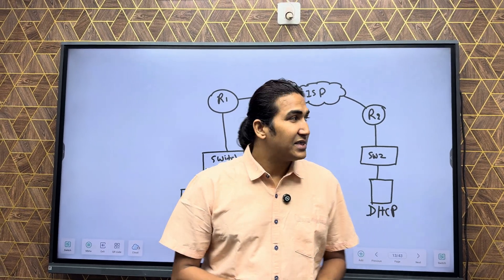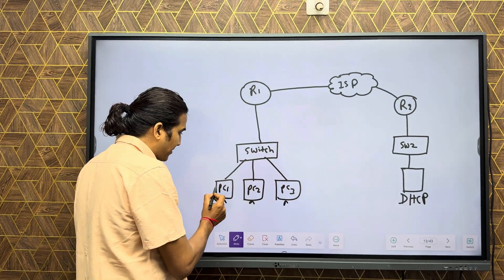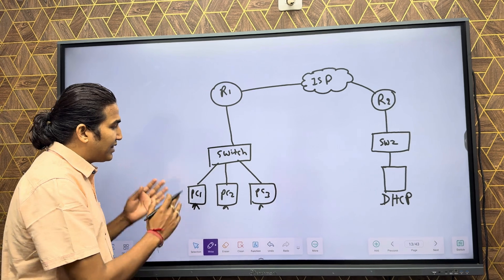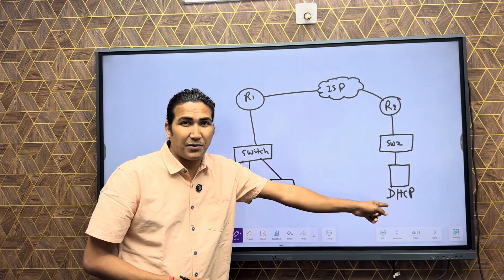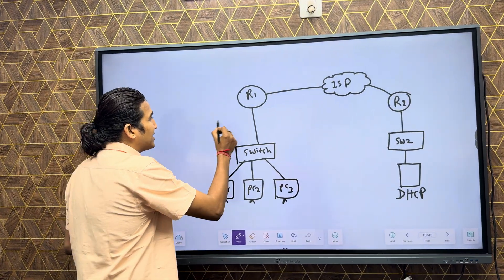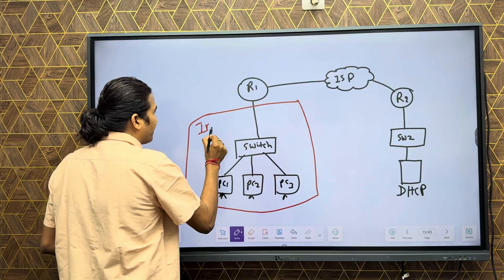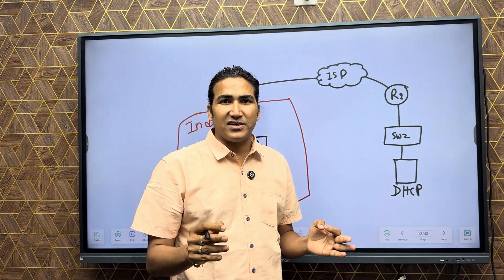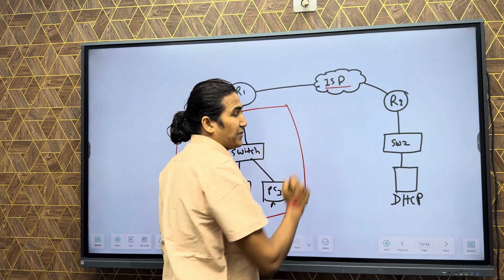For example, see this scenario. My client machines — DHCP clients PC1, PC2, PC3 — are DHCP clients. When these DHCP client machines are in a different subnet from the DHCP server, consider this office is in India and the DHCP server is in a data center somewhere — let's say in London — connected via ISP.